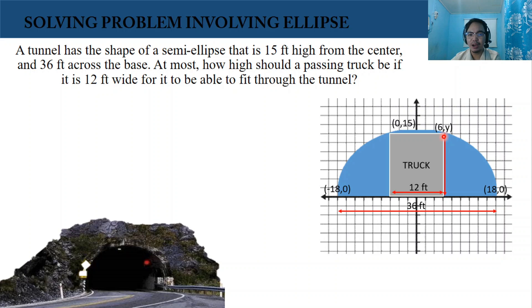So we are going to have our equation of the ellipse. Since the major axis is horizontal, this is our equation: x squared over a squared plus y squared over b squared equals 1.